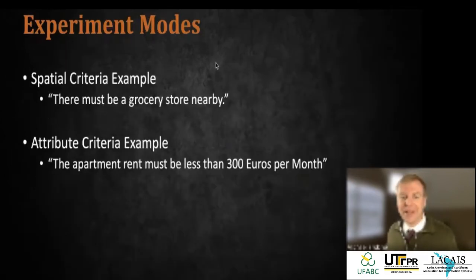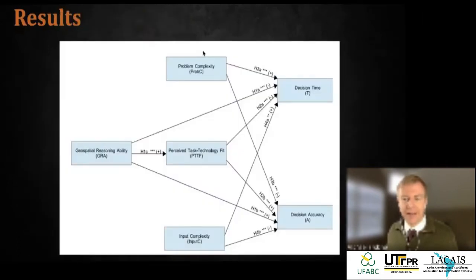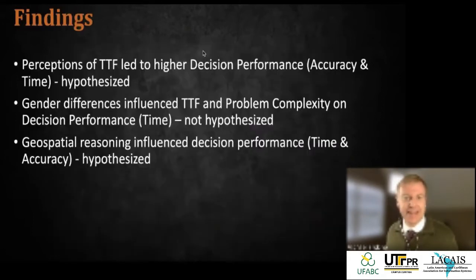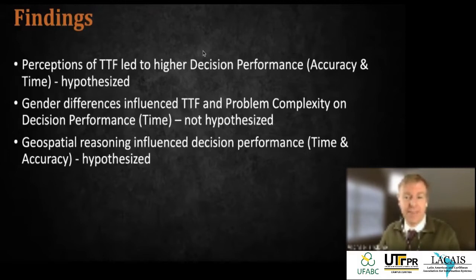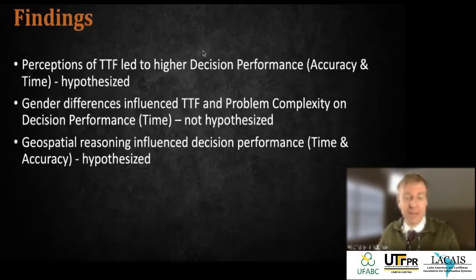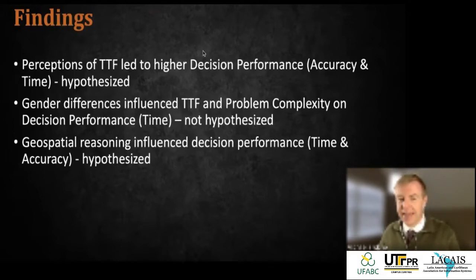For low problem complexity we used proximity criteria and attribute criteria. An example proximity criterion: 'there must be a grocery store nearby' — requiring spatial thinking to look at the map and see if a grocery store is near an apartment. An attribute criterion: 'rent must be less than 300 euros per month.' For high problem complexity we used four proximity criteria and two attribute criteria. The results were very positive — everything loaded at significant levels.